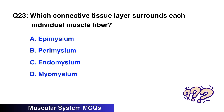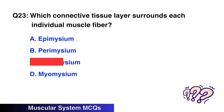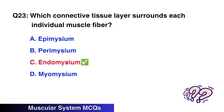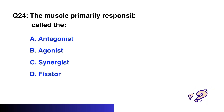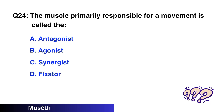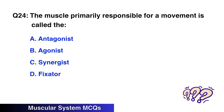Question No. 23: Which connective tissue layer surrounds each individual muscle fiber? The right option is C: Endomysium.